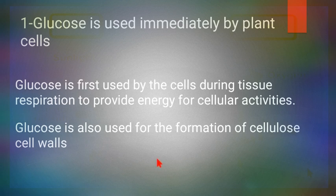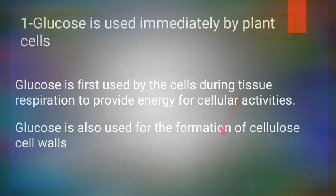Cell wall is made up of cellulose, and cellulose is also a carbohydrate like glucose. So glucose helps in the formation of cellulose cell walls, and in respiration it is used as a substrate.